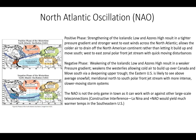During the positive phase of the NAO, this allows colder air to drain off the North American continent rather than letting it build up and move south. Generally with a positive phase NAO, this dark arrow line here is your polar front jet stream, showing more of a west-to-east zonal flow to the jet stream. Along this stronger westerly wind flow, you get upper-level disturbances that rotate through this pattern, through the long-wave pattern.